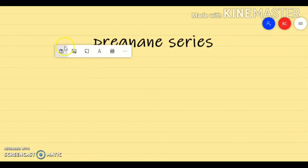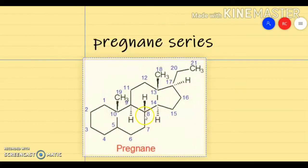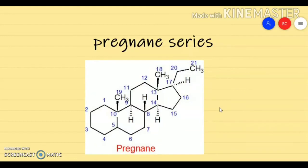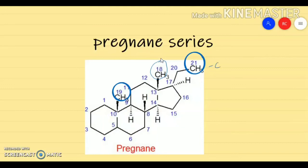Next we'll see the chemistry of progesterone. Progesterone contains a total of 21 carbon atoms, which means it belongs to the pregnane class of steroid. What you see on the screen is the pregnane nucleus — it contains 21 carbon atoms. In addition, it also contains a methyl group at C10 and C13, and a two-carbon side chain at C17.